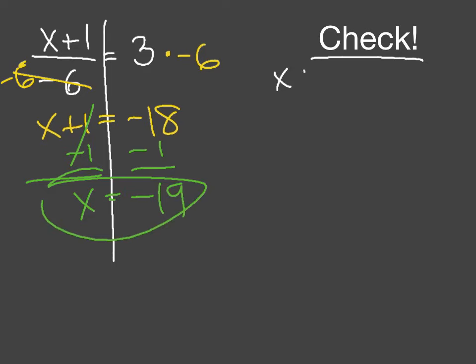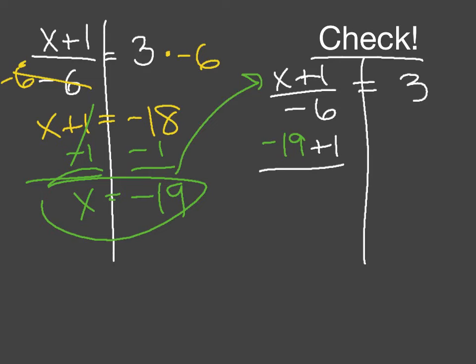But as always, we're going to check this. So x plus 1 all divided by negative 6 equals 3. If I plug in the answer that I got, is it going to equal 3? Well, negative 19, keep everything else the same. And let's calculate. Negative 19 plus 1 on the top part of this fraction here. Negative 19 plus 1 is negative 18 divided by negative 6. Now if I do this division, negative 18 divided by negative 6, that is 3. 3 equals 3, so I know I'm correct.